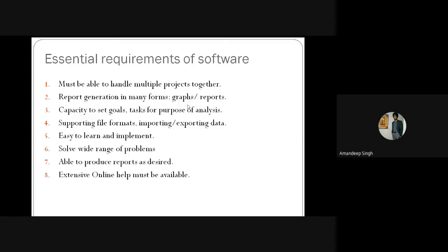There should be the capacity to set goals and tasks for the purpose of analysis, such as using Gantt charts and setting a baseline for the progress of the project. Generally when we use the Gantt chart, we set our tasks along the horizontal line where we are checking the progress of the project. This software system should have the capacity to set timelines to achieve progress on the project.